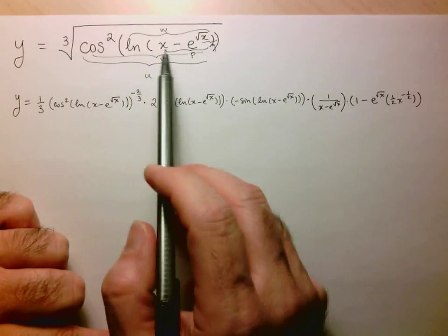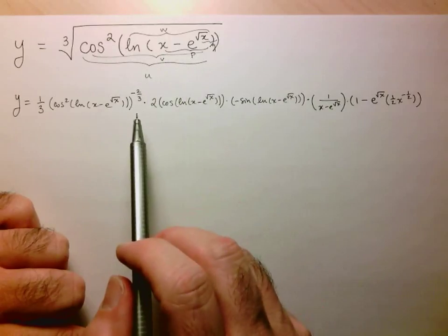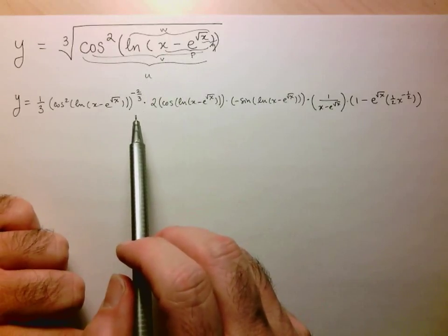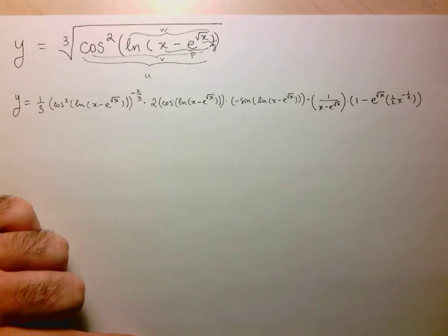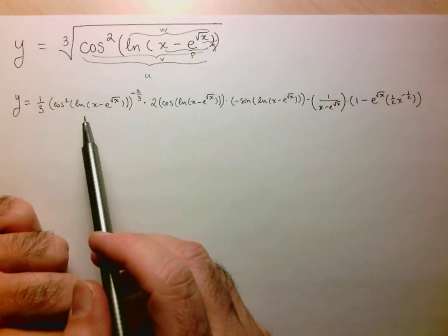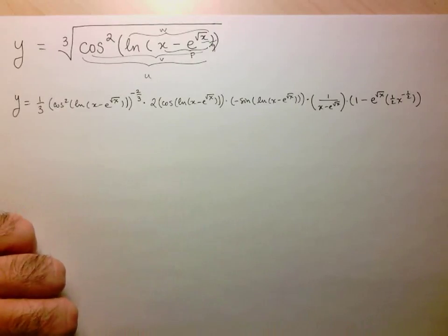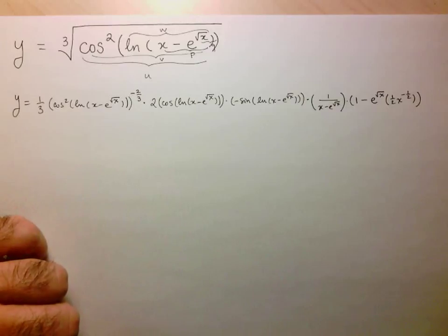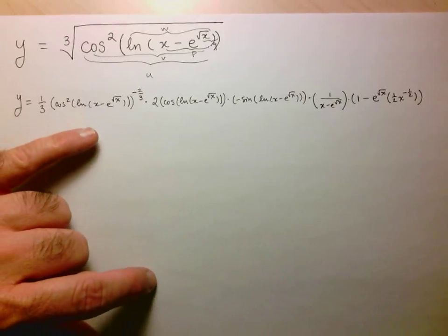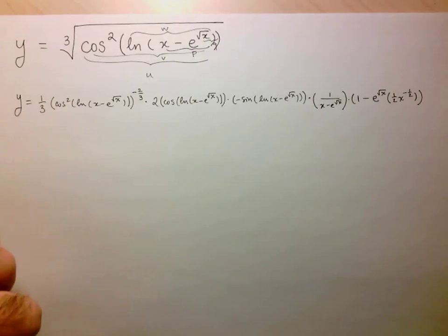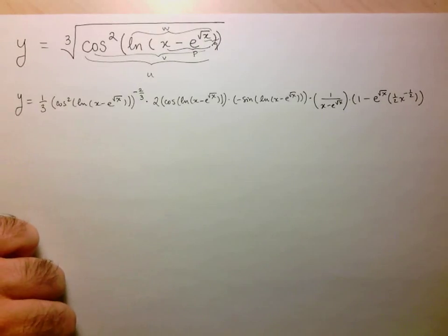Then it was logarithm of some expression, so 1 over that expression, and then lastly the derivative of that input to the logarithm. That's it for this one. If you want to practice these, you can just make them up, make up some crazy function and solve it. You can always check your answer with a derivative calculator. I should mention I would never ask you to simplify something like this. The idea is just to see whether you know how to apply this chain rule when you have multiple compositions.